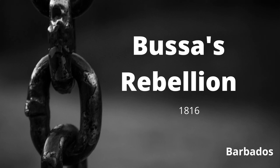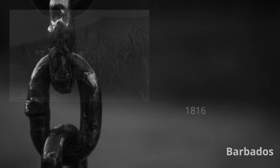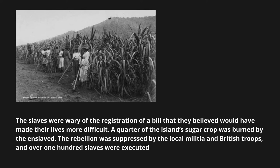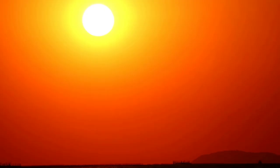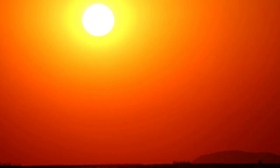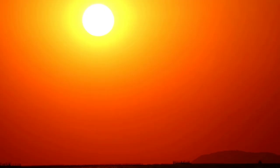Bussa's Rebellion of 1816 was the largest in the history of Barbados. This rebellion was led by the African-born slave Bussa, and was carefully planned and executed. The slaves were wary of the registration of a bill that they believed would have made their lives more difficult. A quarter of the island's sugar crop was burned by the enslaved. The rebellion was suppressed by the local militia and British troops, and over 100 slaves were executed.